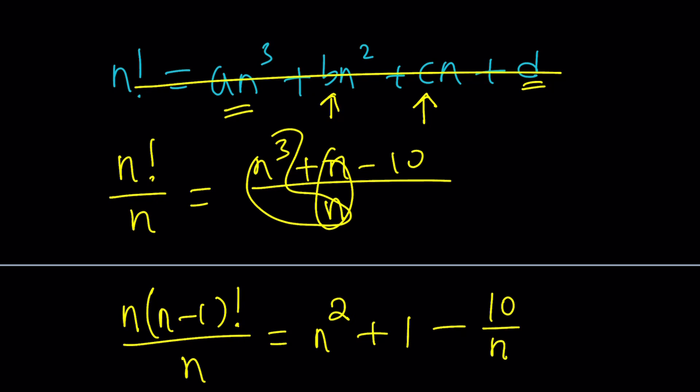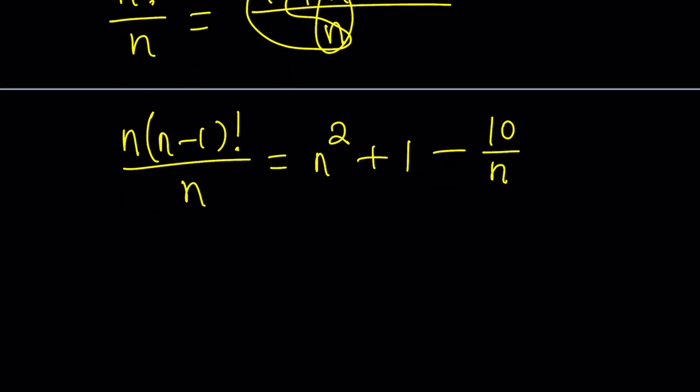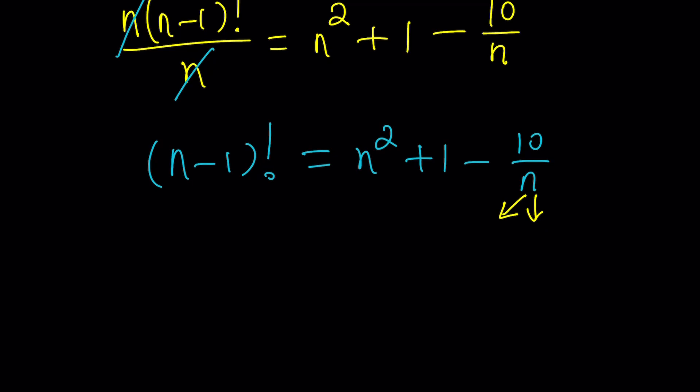This is the best part because now I can use the divisibility criteria. But first, let's go ahead and simplify this. One thing that I want you to notice is that n minus 1 factorial is an integer. Isn't that beautiful? So the right-hand side also needs to be an integer. But n squared plus 1 is an integer. Is 10 over n an integer? Sometimes. When? When n divides 10. So the conclusion from here, this is number theory which is always beautiful, n divides 10. What does that mean? What numbers divide 10?